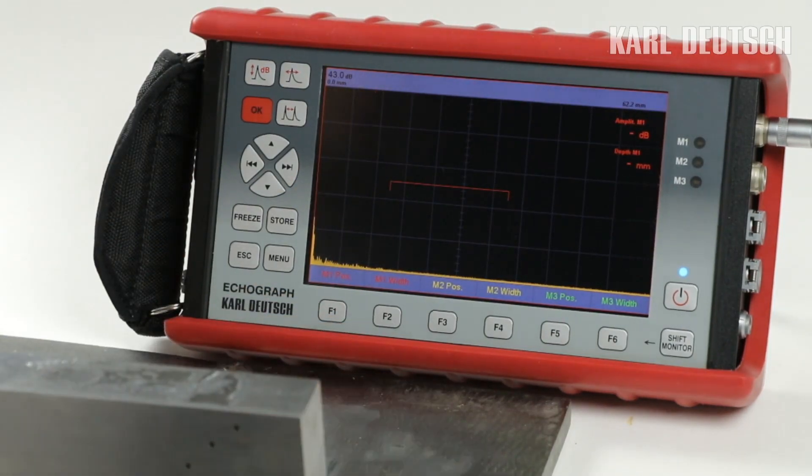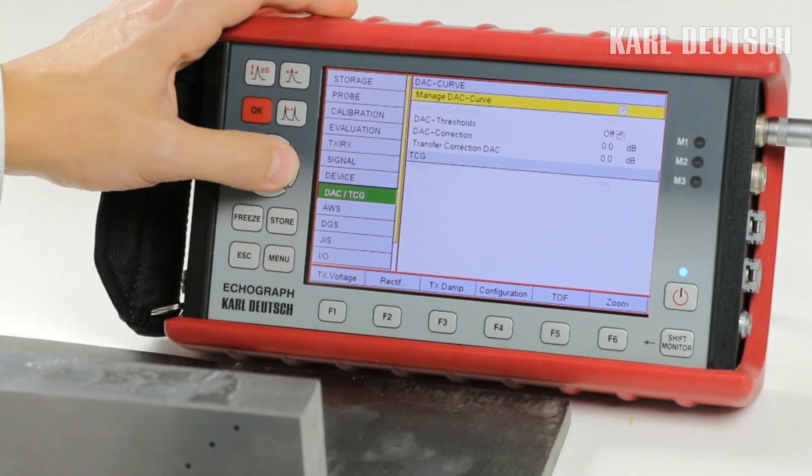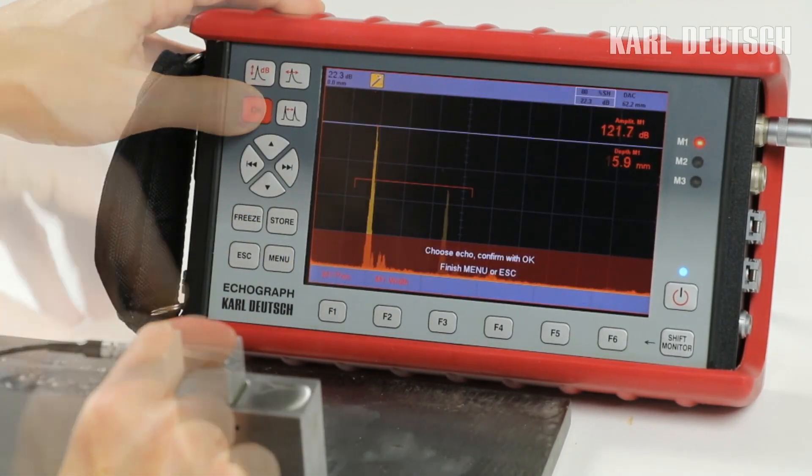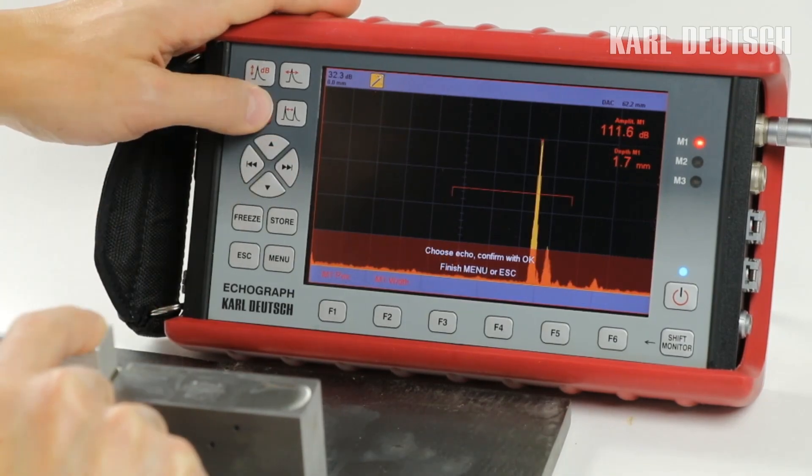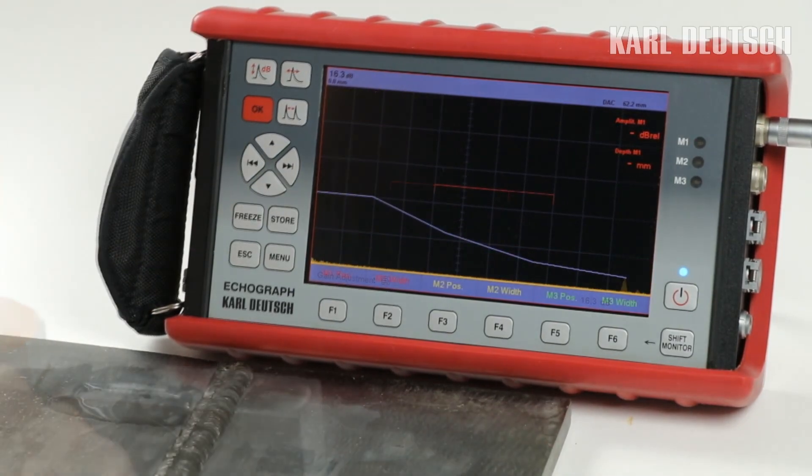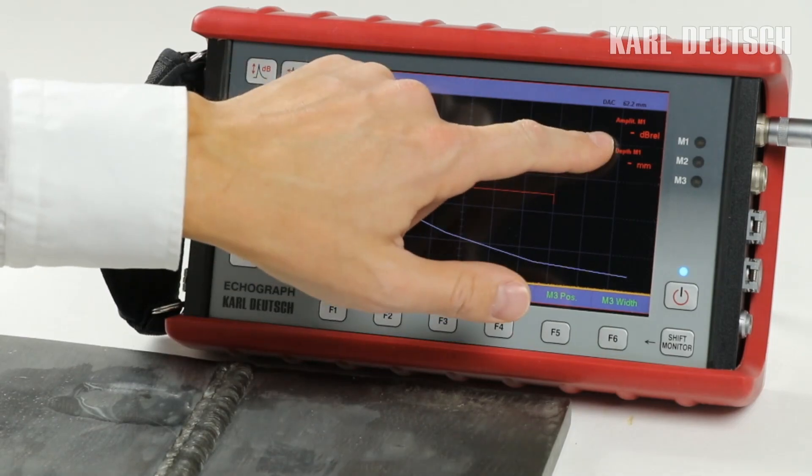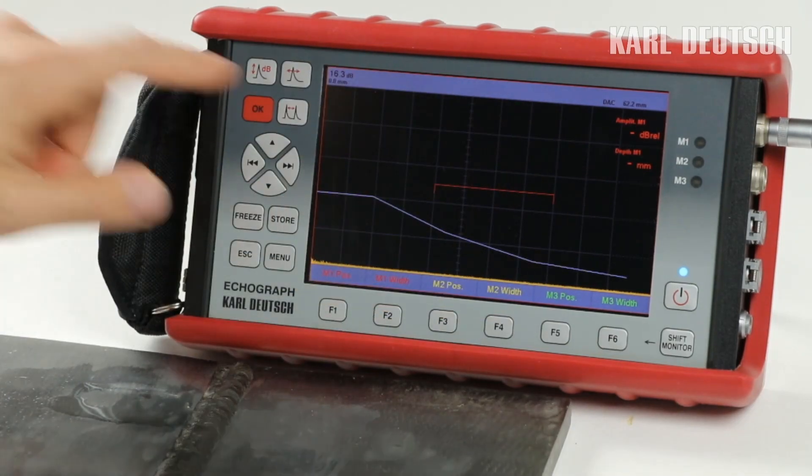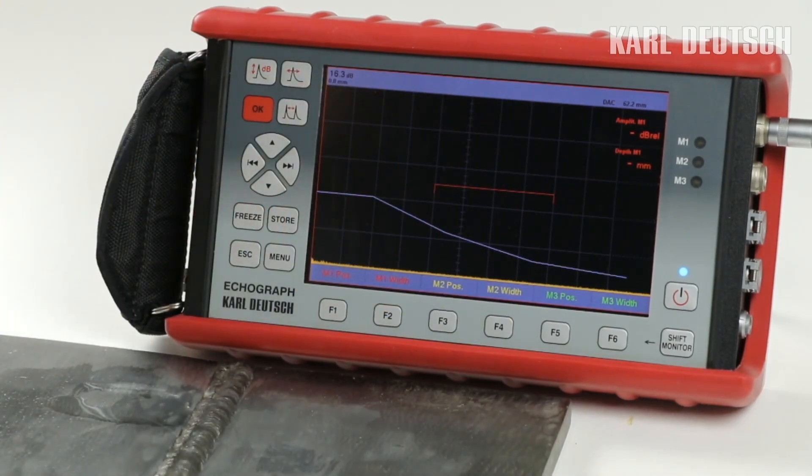Another wizard is available for the sensitivity adjustment according to the DAC method on a reference block. The echograph is now ready for testing. The amplitude value now refers to the DAC curve, independent of the actual gain setting.